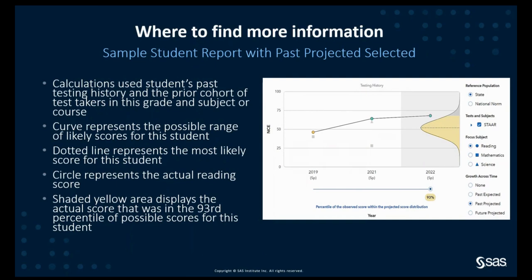Another resource is the student report. We went over a sample student projection earlier. This image looks similar, except that it shows the past projected score for a test that the student has now already taken, rather than a future projected score for a test that the student has not yet taken. So if we made a projection in 2019 to the 2021 math 7 test, then the past projected score shows us what was the student's projected score given back in 2019. On this graph, the dashed line represents the student's most likely score if they had the average schooling experience. This information can be compared to their actual score, which is shown by the green dot above the bell curve. It's useful to understand how individual students scored relative to their projected scores over these pandemic years. In this example, our student exceeded their projected score, but we know this wasn't the case for most students.